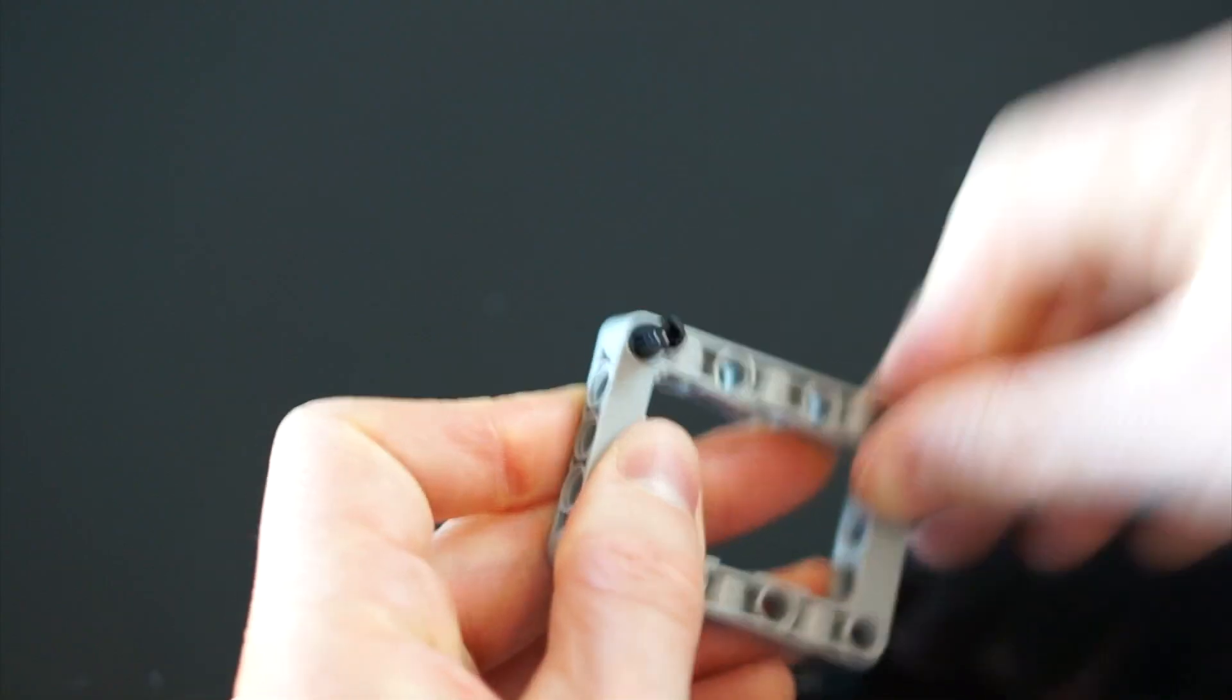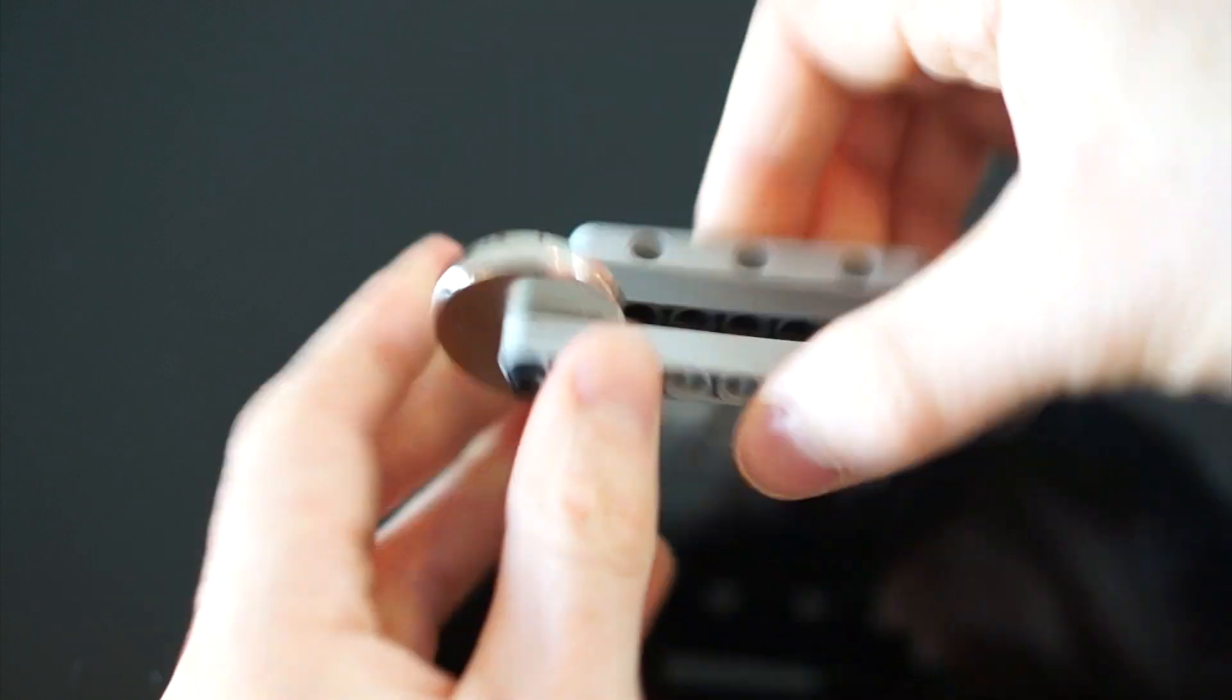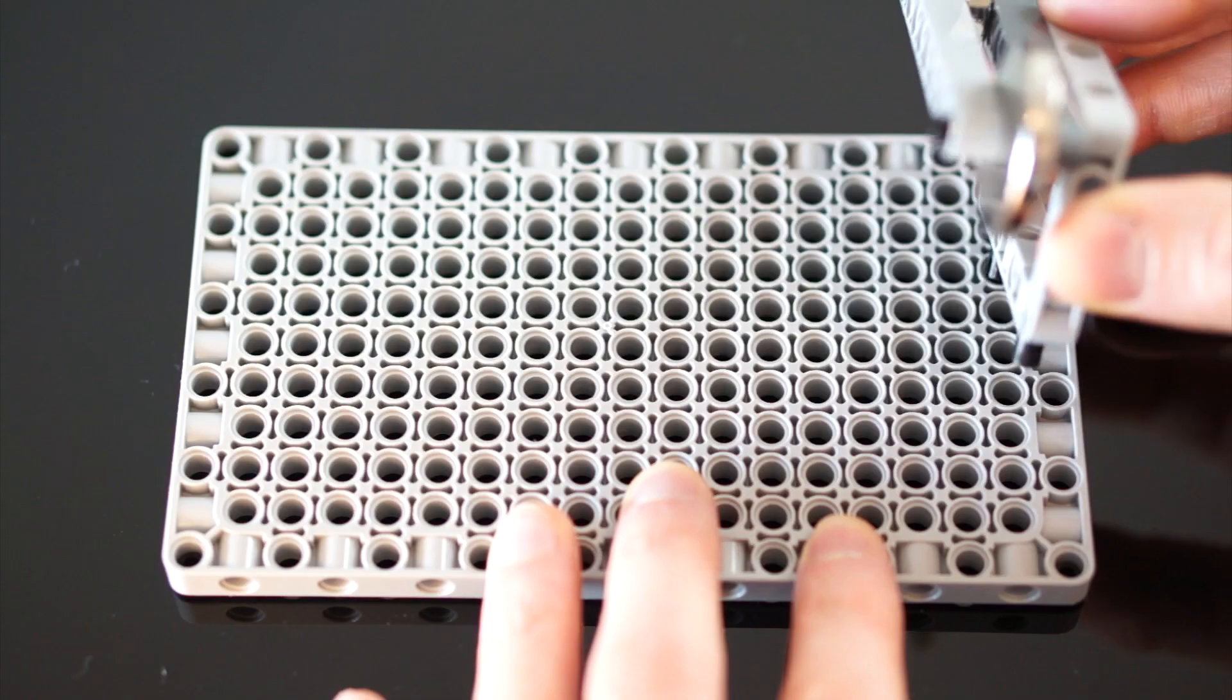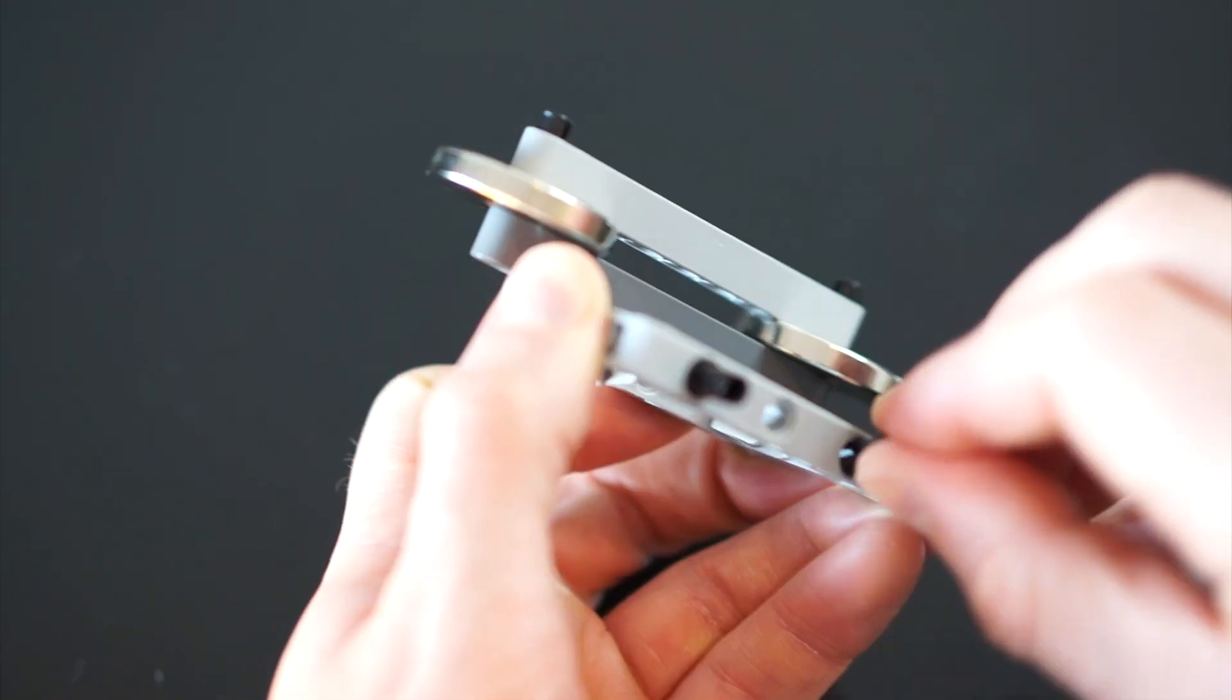Next then we need to build a platform that'll host the magnets that'll keep our spinner levitating. We'll connect one magnetic assembly to the platform here and then after building a second one, we'll need a smooth surface for the spinner to sit against.